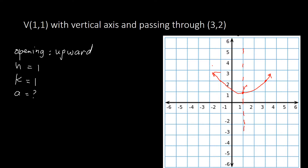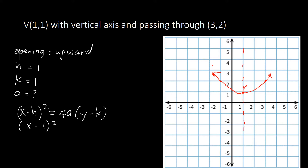We can find A by plugging our known information into the standard equation of the parabola. For upward opening, the equation is (X − H)² = 4A(Y − K). Plugging in H = 1 and K = 1, we get (X − 1)² = 4A(Y − 1). To find A, we will substitute the X and Y values of the point on the parabola.